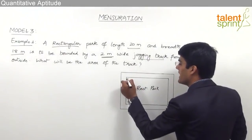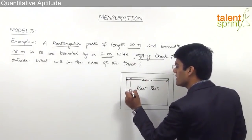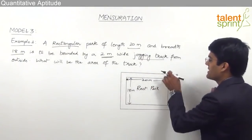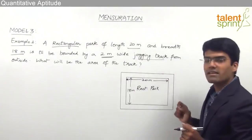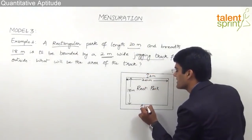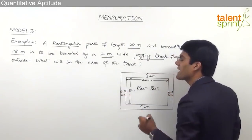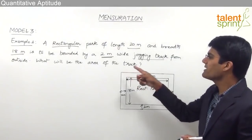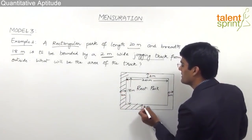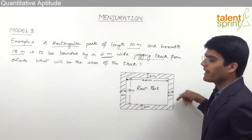The given length is 20 meters and the breadth is 18 meters. Outside this rectangular park, a jogging track has been constructed and this track is 2 meters wide on all four sides. The question is what is the area of the track — we need to find out the shaded portion here. This shaded area is nothing but the jogging track which has been constructed.